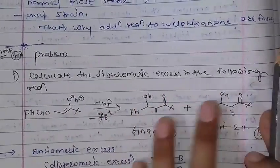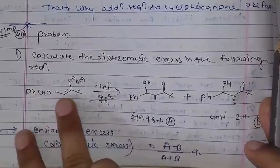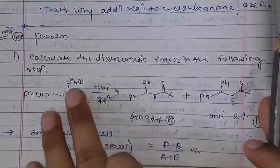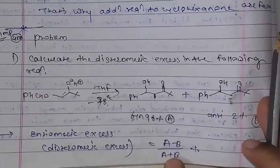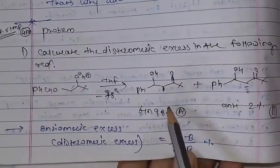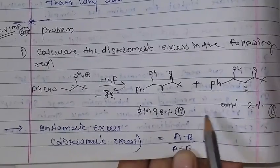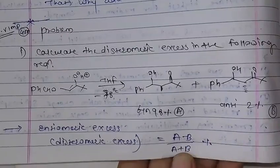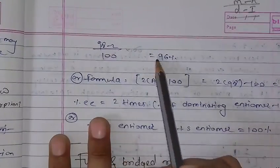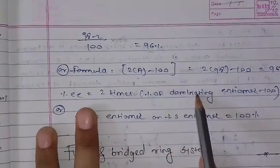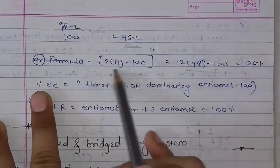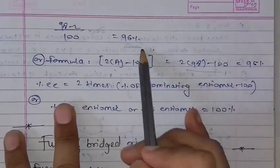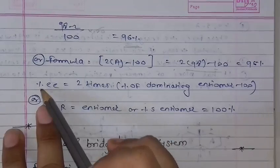Suppose you calculate the diastereomeric excess in the following reaction. You write down the formula: the diastereomeric excess is (a minus b) divided by (a plus b). If you calculate the diastereomeric excess, consider the ratio: if a plus b equals 6 and you take a equals 4, the result gives the excess. The formula can be used to calculate the order of stereoselectivity, and this gives a value such as 9.0, which is twice the dominant diastereomer.